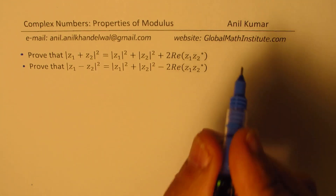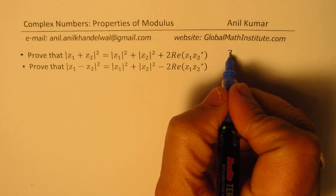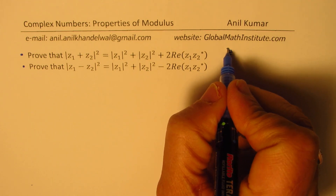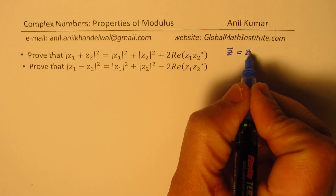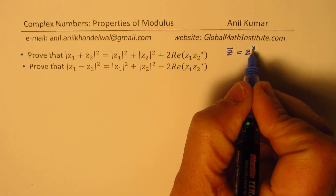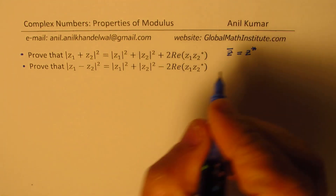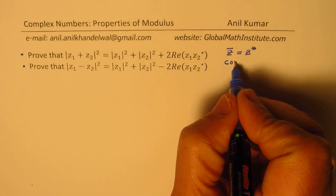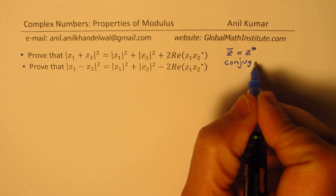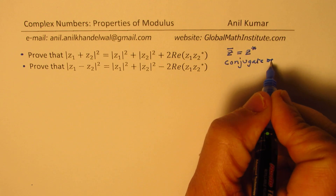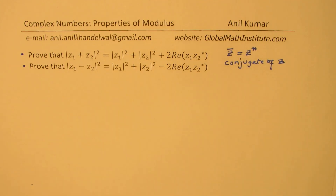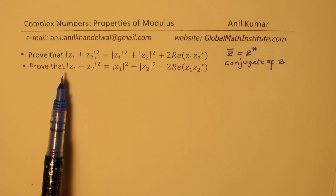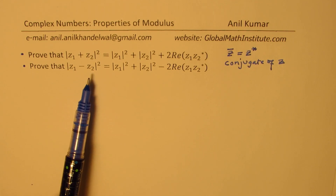Let me write down the nomenclature. The conjugate of a complex number can be written with a bar on the top, or it could be written with a star. Both notations represent the conjugate of the complex number z.